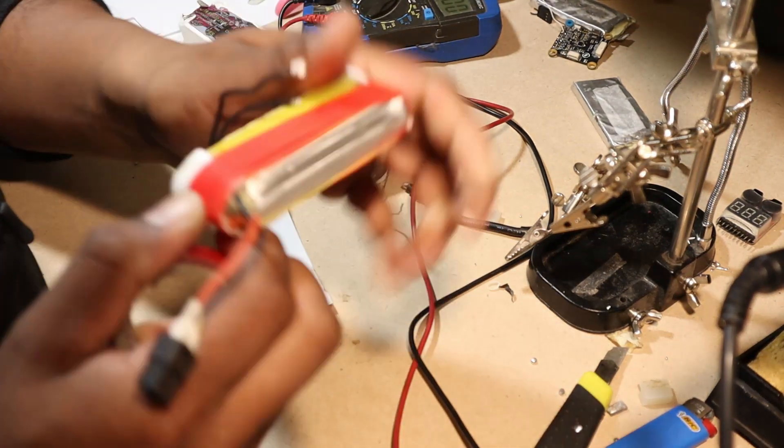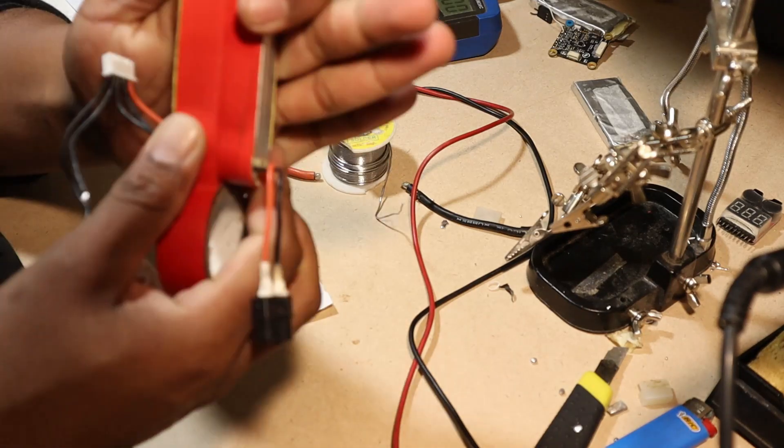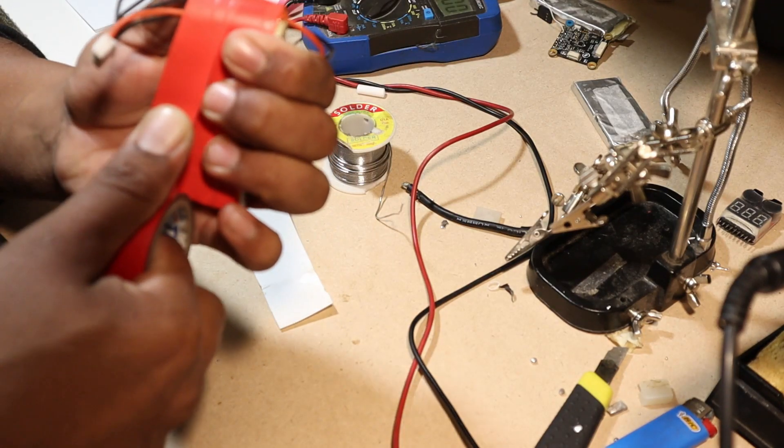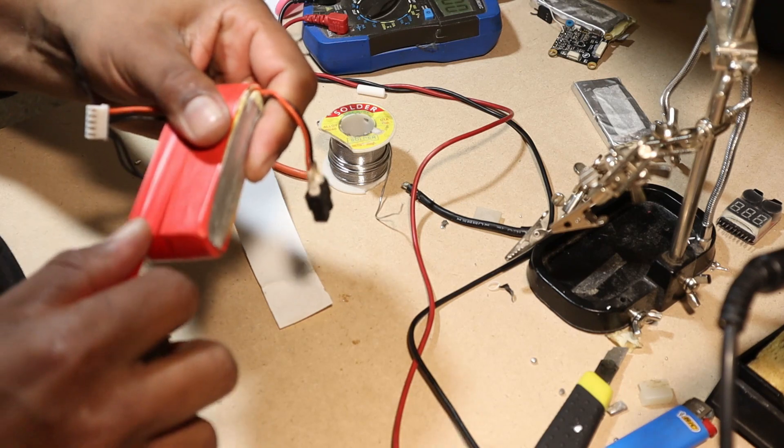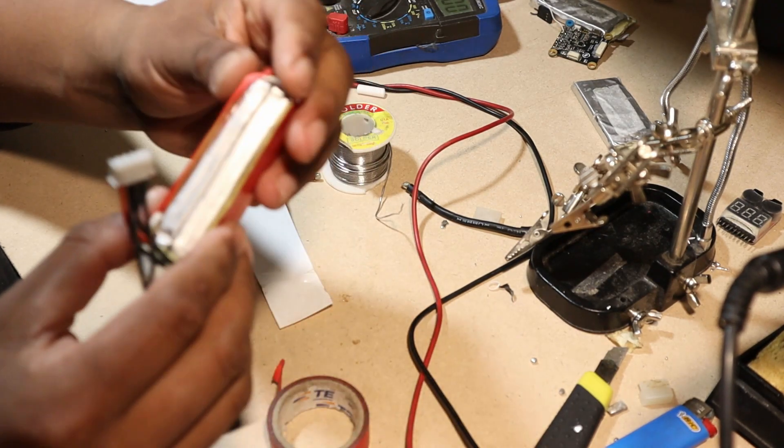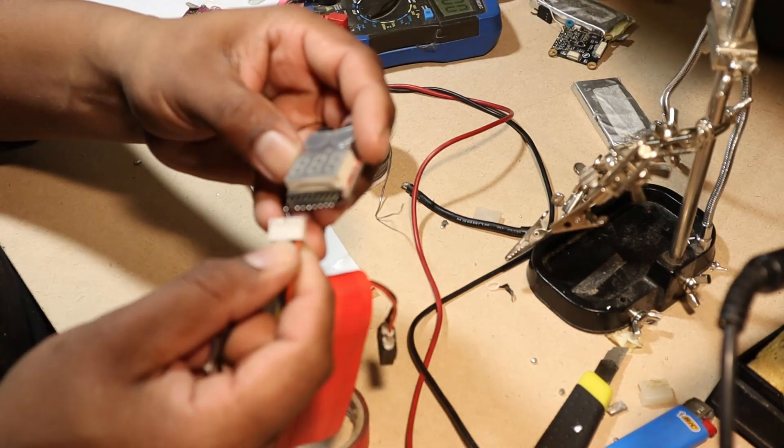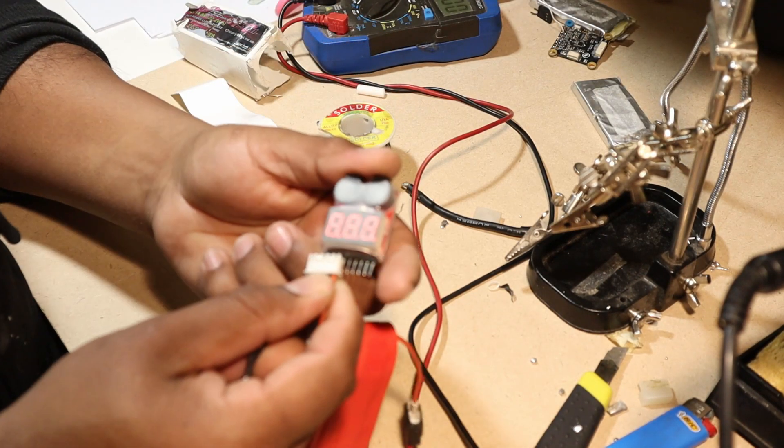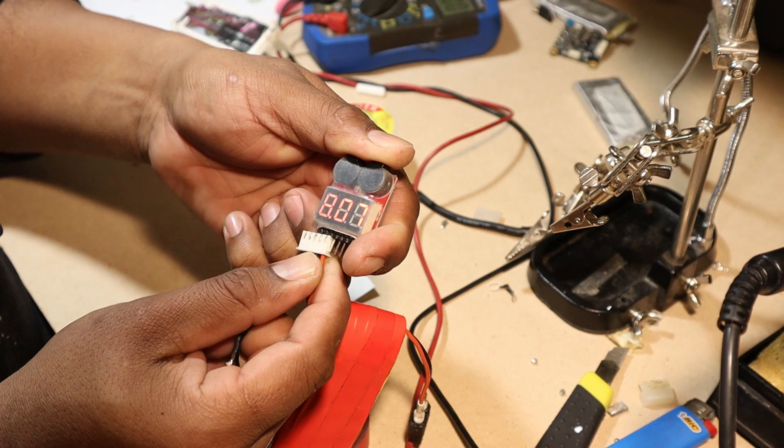Make sure when you're wrapping this battery up, you wrap it up nice and tight because you don't want this battery to open up on you while you're using it. Always make sure to check your battery before you wrap it all the way around. Since everything is good with the battery, let's wrap it up all the way around.